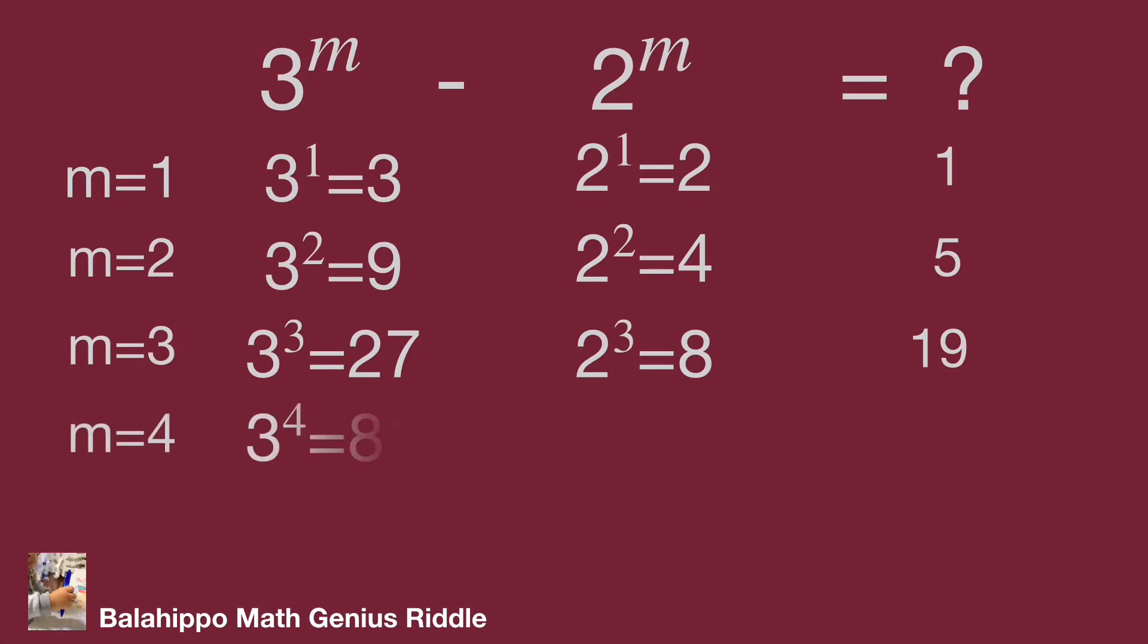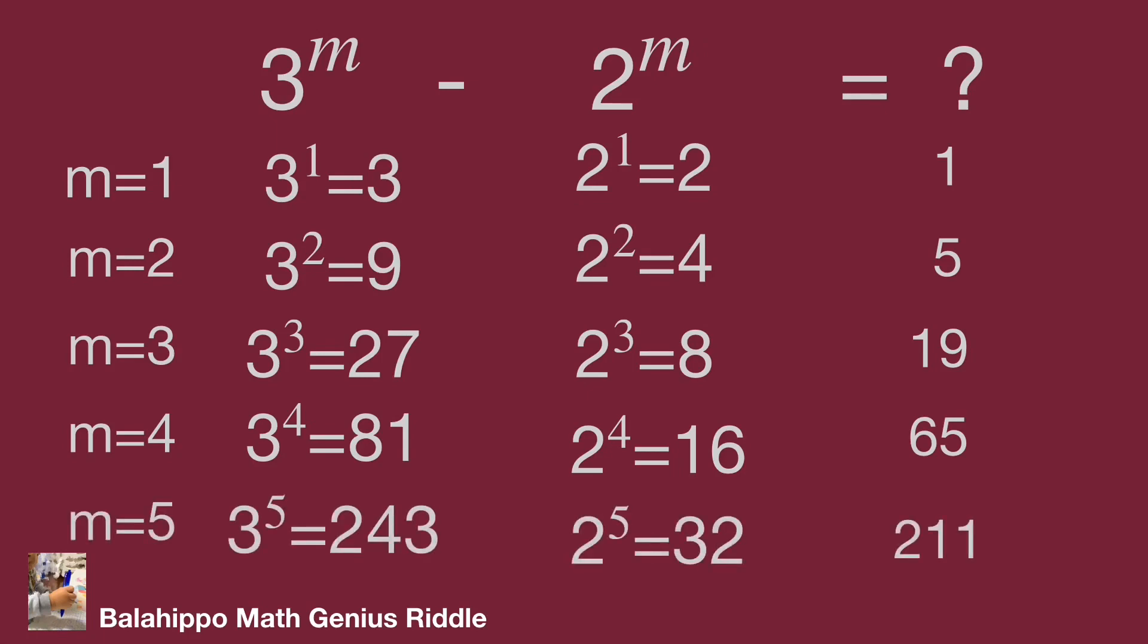m equals 4: 3 power 4 minus 2 power 4 equals 65. m equals 5: 3 power 5 minus 2 power 5 equals 211.